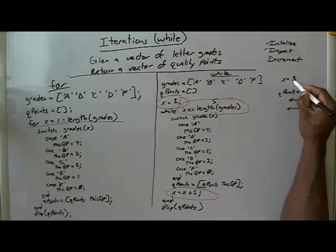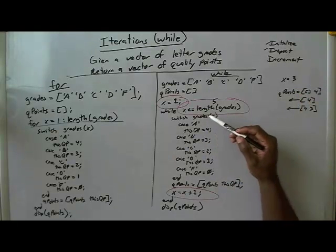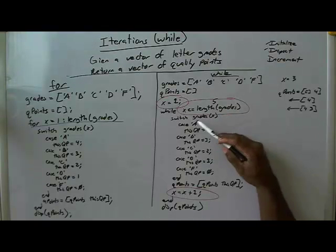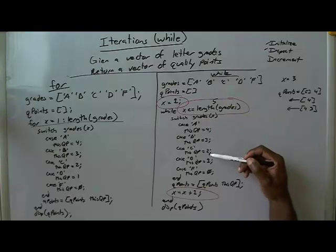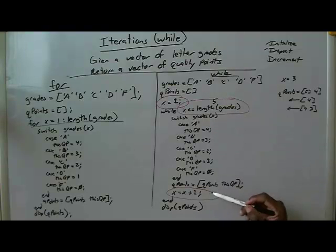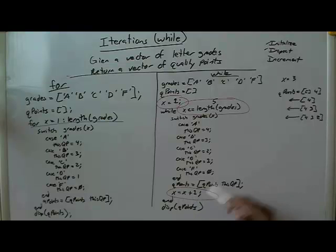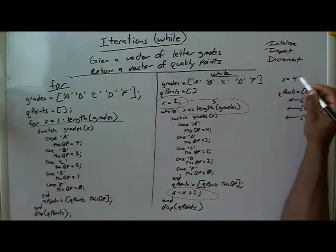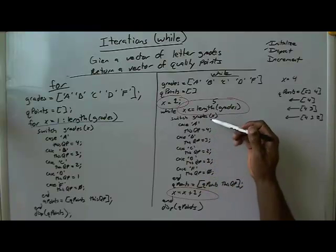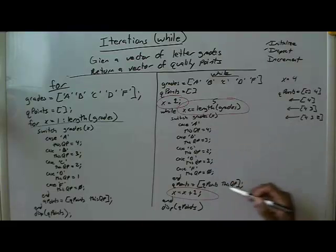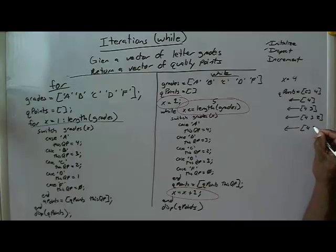X gets incremented again to 3. Go back up to the top. 3 is less than 5, so you go through again — you pass this test. Now you're switching on grades indexed at 3, which is C. We find QP equals 2. We concatenate that onto the end, so now QPoints is equal to vector 4, 3, 2. X gets incremented again — X is now 4. You pass this test because 4 is less than 5. Grades indexed at 4 is D, this QP equals 1, and it gets concatenated onto the end. So now it is the vector 4, 3, 2, and 1.